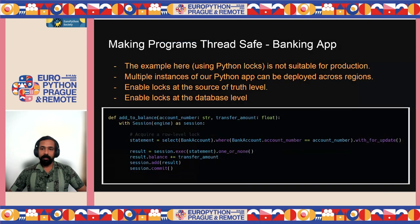For production, this simple Python lock is not sufficient because there can be multiple Python application instances and other applications accessing the database simultaneously. We should enable locks at the source-of-truth level. SQL provides database-level locks — using SQLModel, we can append with_for_update() to our query statement, which acquires a row-level lock for the session. Other threads can only access the value after the current thread completes.